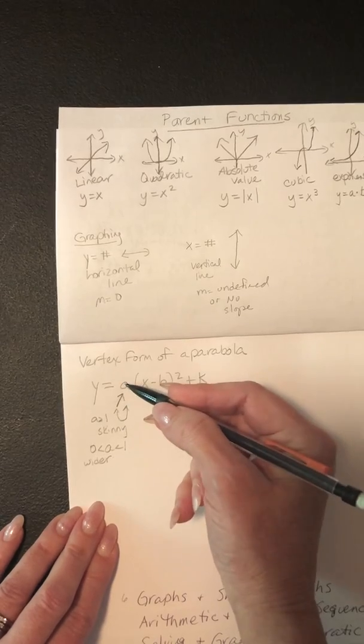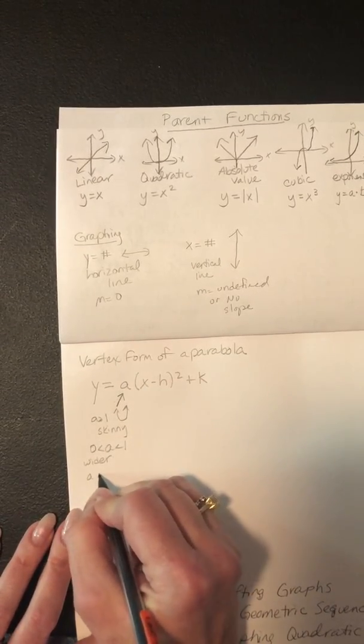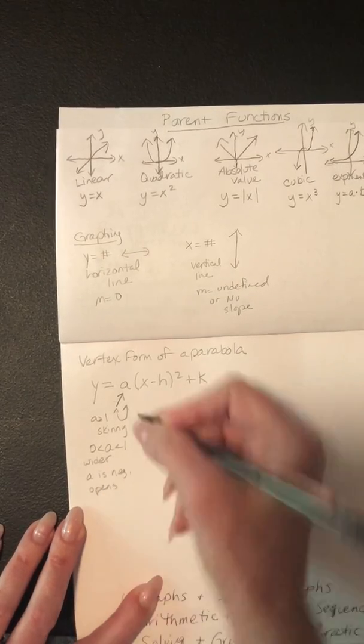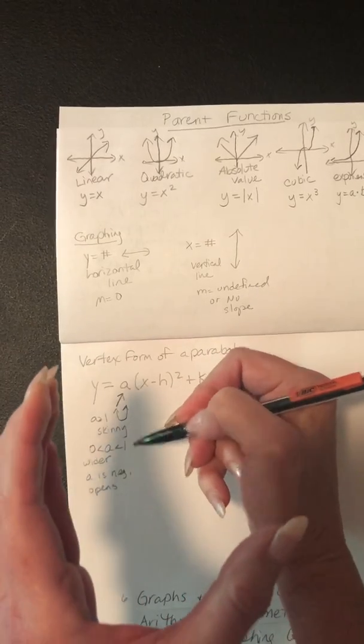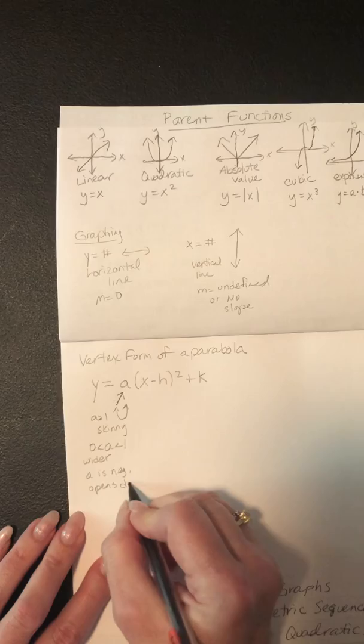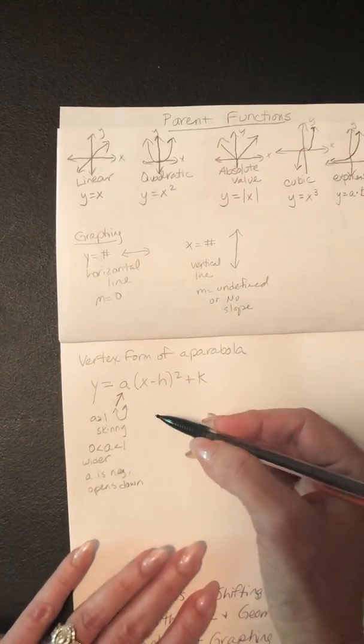If a is positive, it opens up. If a is negative, it opens down. And we always say that positive people are happy, so it looks like a smiley face, and negative people are sad, so it looks like a frowny face. So this would be opens down. Okay, so the a value is very important.